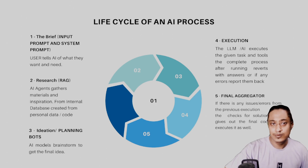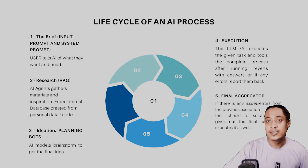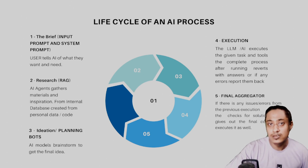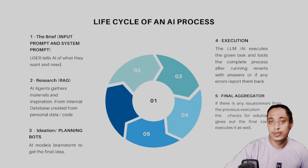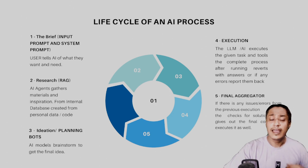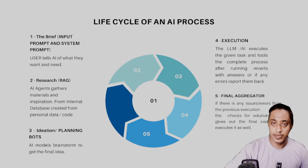Then it moves to the ideation phase where the AI model plans and brainstorms what to do. After that it goes to execution — the tool executes the command — then a final aggregator checks for errors and returns an updated code.